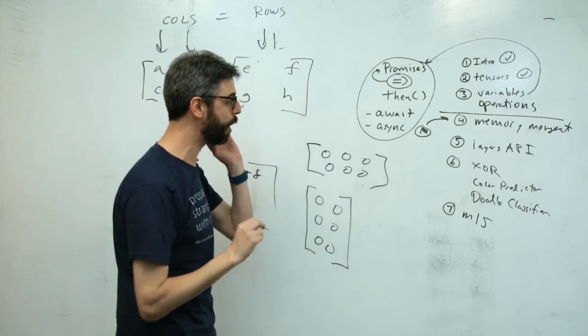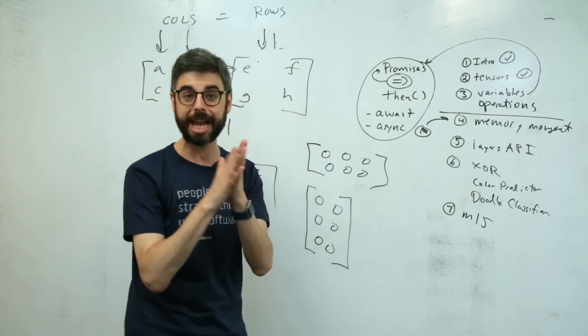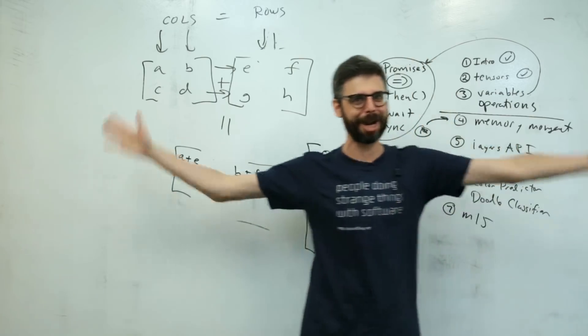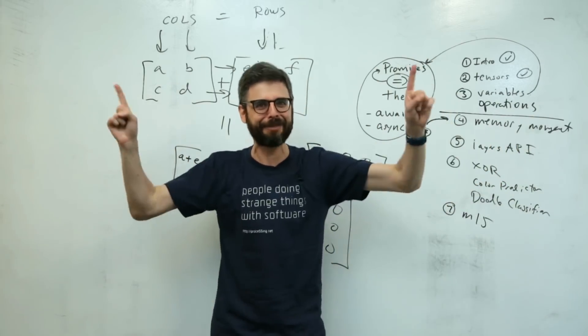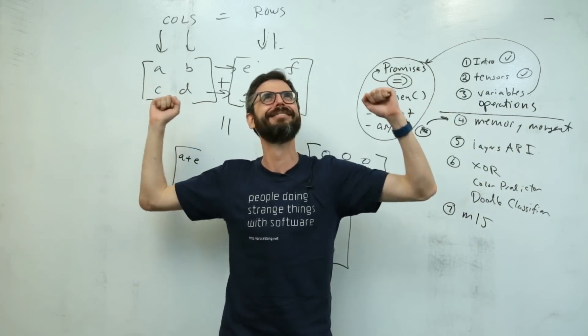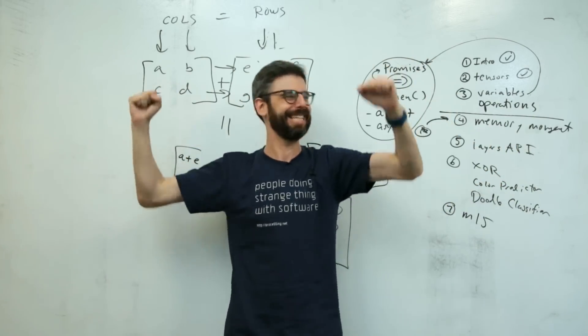So we have to carefully think about how we're allocating memory and explicitly deallocate it. That's what I want to look at. We're going to make a memory leak happen, and then we're going to fix it.